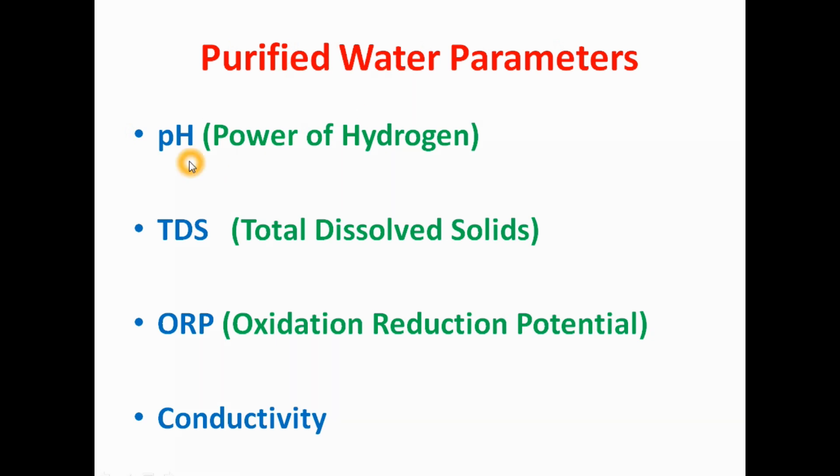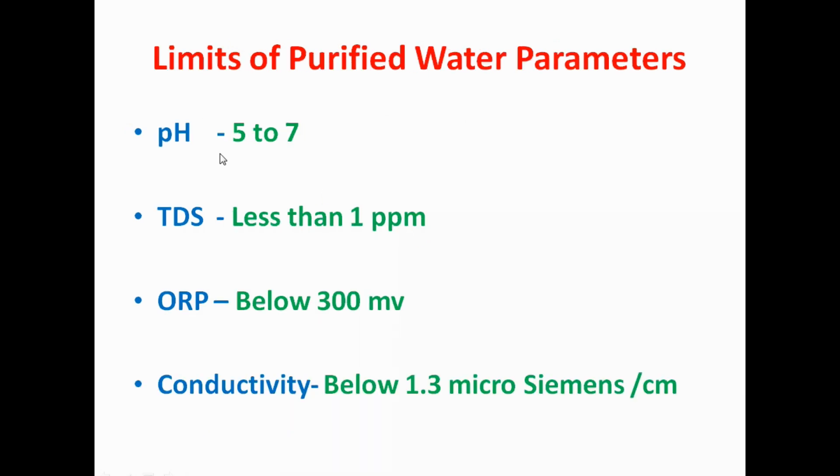Now we will see the range or limit of all these parameters. pH should be 5 to 7. TDS should be less than 1 ppm. ORP should be below 300 millivolt. And conductivity should be less than 1.3 microsiemens per centimeter. These are the parameters and their limits.